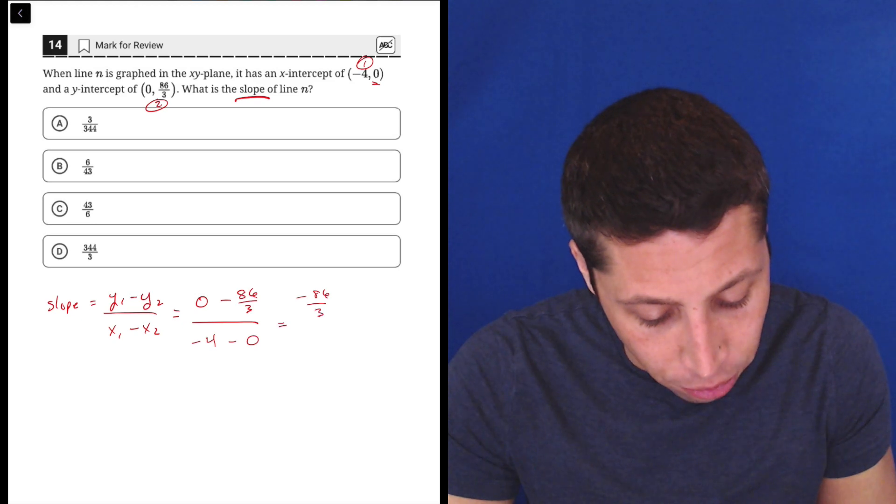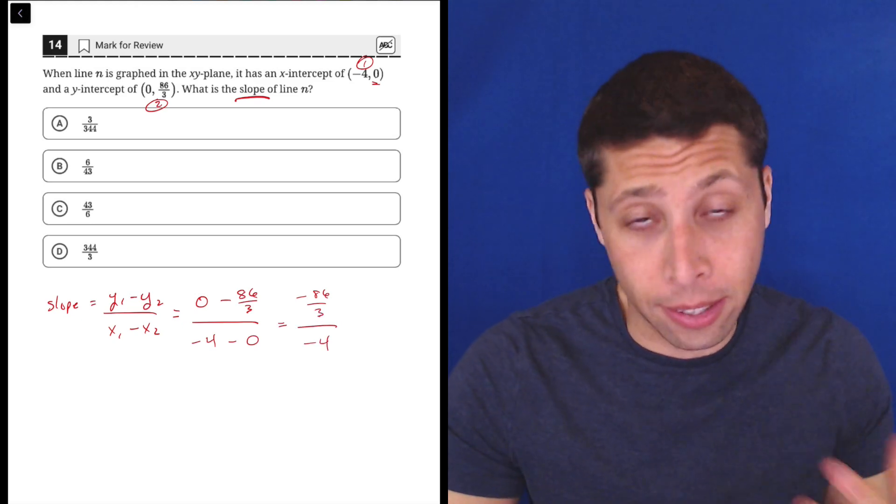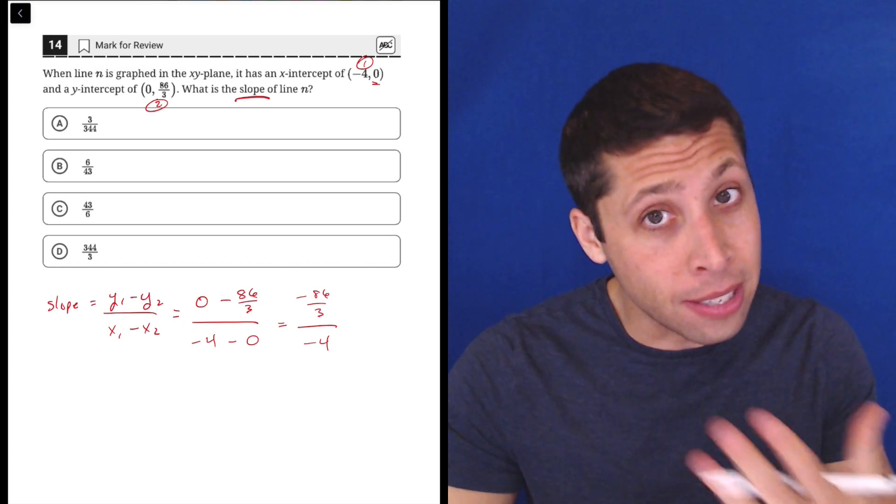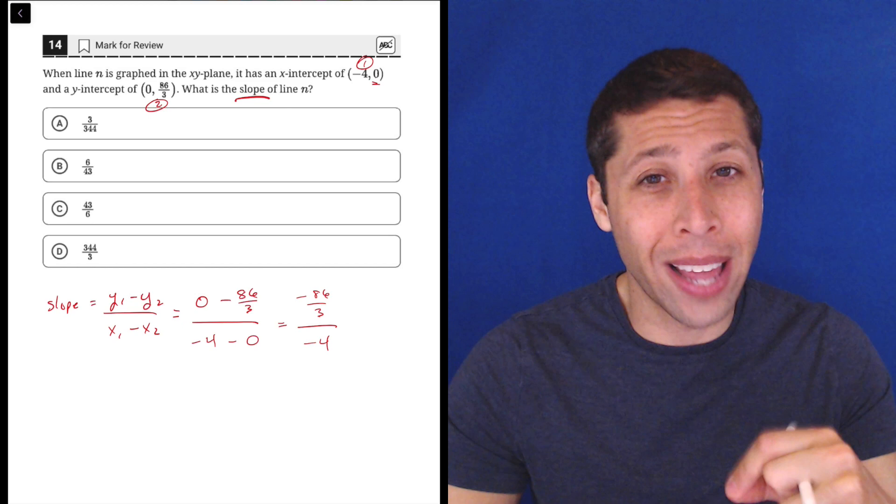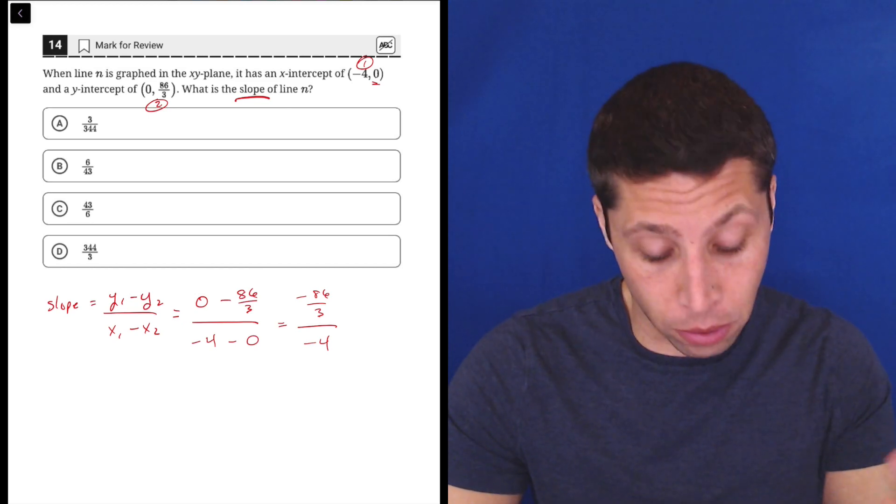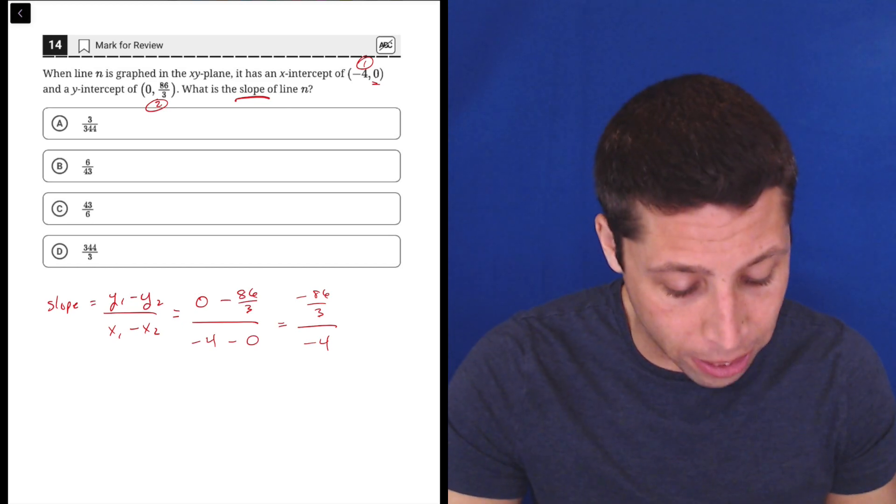So we get negative 86 thirds divided by negative 4. So the zeros are going to let a lot of things go away, but we do have to worry about these negatives that appear in this formula. A lot of people ignore those negatives when there are other negatives in the formula, or in the points, I should say. Just be careful.